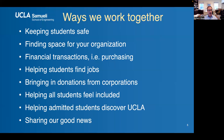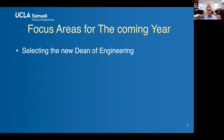Just briefly, I'm going to talk about some things that are a focus for the coming year. Dean Murphy moved on — she's now president of Oregon State University. We have Bruce Dunn, our previous associate dean for physical resources and research, who is now the interim dean of the school. In the coming year, we're going to select the new dean of engineering, and we want the students to participate in that selection process, so look out for news about that.